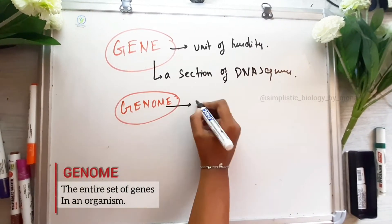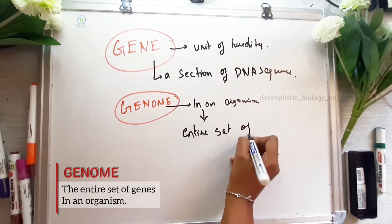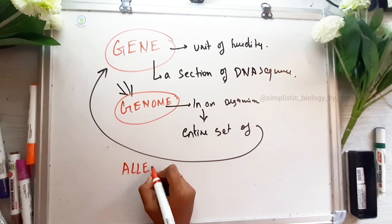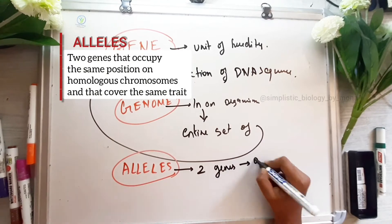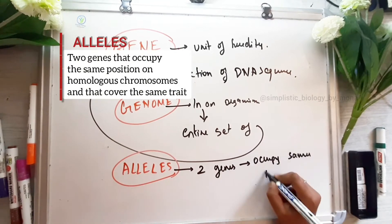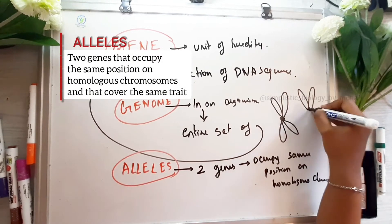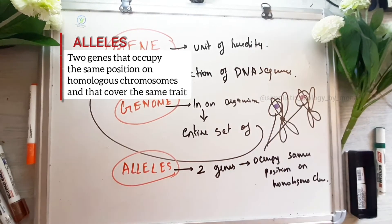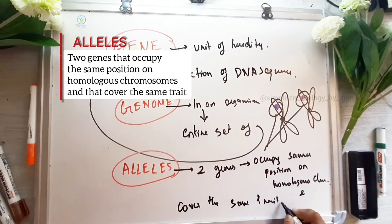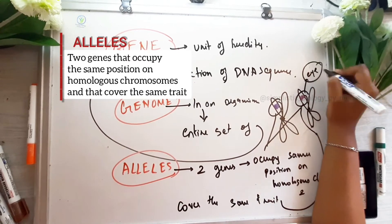Genome refers to all genes of an organism. For homologous chromosomes, here is a last example: two genes at the same position — that is, they code for the same trait.